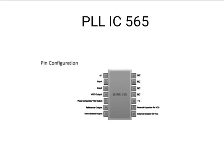Next is PLL IC 565. The phase lock loop is one of the vital blocks in linear systems, and it is useful in communication systems such as radar, satellite, FM, etc.